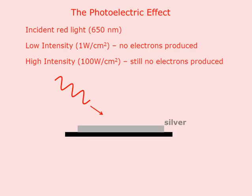In this tutorial we'll discuss the photoelectric effect. Let's start with some metal — we'll use silver as an example. We're going to do this in a vacuum because we're going to be looking for electrons that jump out of the metal as a result of shining light on the metal.